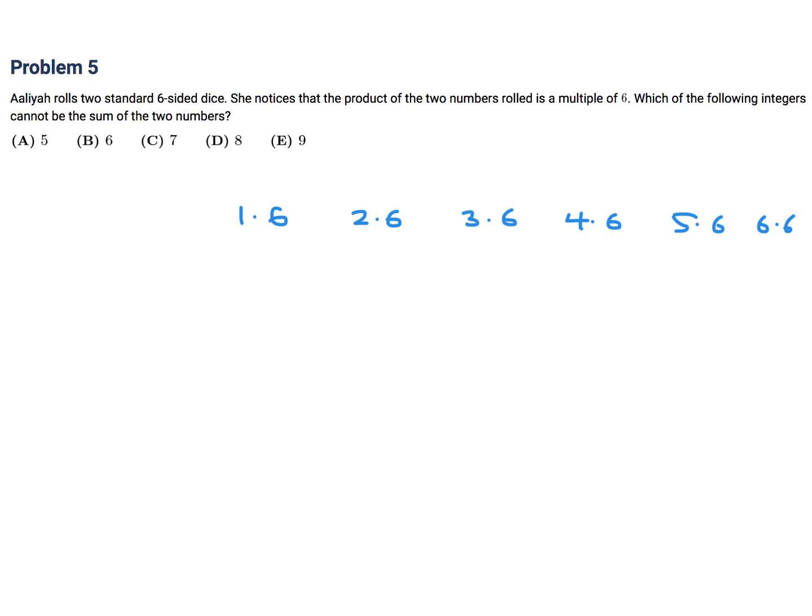Or you could have 2 times 3, or 4 times 3. That's going to be 6, or 6 times 3. Yeah, these are going to be also multiples of six because you're going to have a 6 in there. So the sums, if we were to write them out, this is 7, 8, 9, 10, 11, 12. And the sums here look to me like 5, 7, and 9.